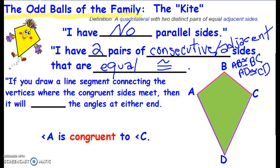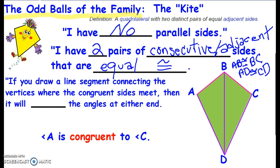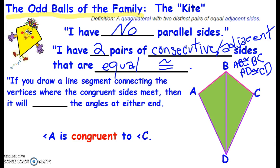Now, if I draw a line segment that connects the vertices where the congruent sides meet. Okay, so what does that mean? Well, up here at B is where the congruent sides meet and down here at D. So if I draw that diagonal, I draw a line segment in. That tells me then that it will bisect the angles at either side.